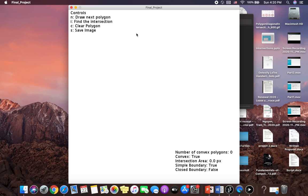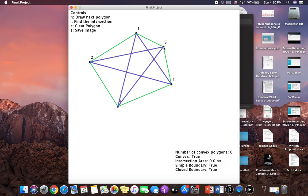Moving on to the demo. I will start plotting the points for the first polygon. If the polygon is green, this is a convex polygon. Once I'm done with the first one, I'll press the letter N to draw the next polygon.